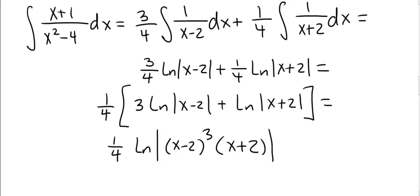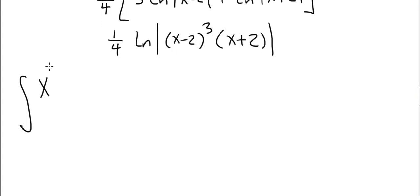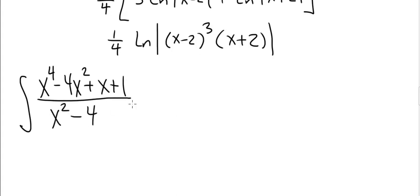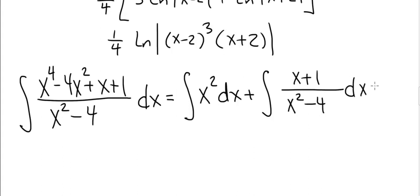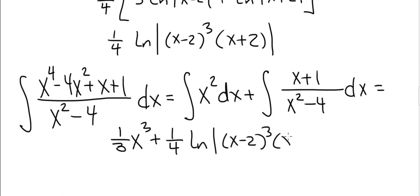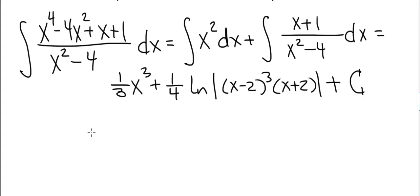Let's put everything together for the final answer. We wanted to evaluate the integral of x to the fourth minus 4x squared plus x plus 1 divided by x squared minus 4 using the method of partial fractions. First, we performed long division, which reduced the integral into two integrals: the integral of x squared dx, and the integral of x plus 1 divided by x squared minus 4. Evaluating both gives the final answer: 1 over 3 times x cubed plus 1 over 4 times the natural log of the absolute value of x minus 2 cubed times x plus 2, plus a constant of integration. This problem shows that sometimes you must perform long division before using the method of partial fractions.